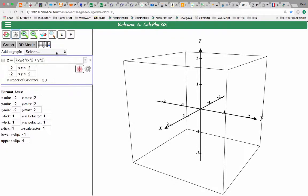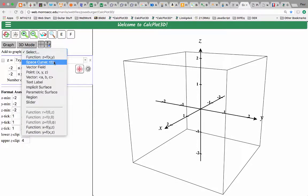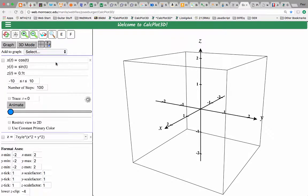So the default space curve that it graphs is a helix or a spiral. We're going to go ahead and select this, and that will graph it off to the right.